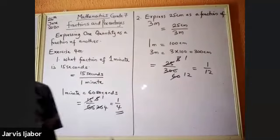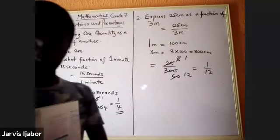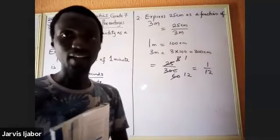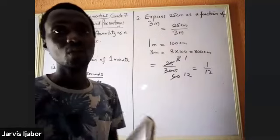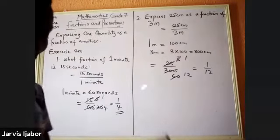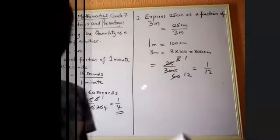So 25 cm as a fraction of 3 meters is 1 over 12. Is that clear? All right, so this is where we are going to end our class today.